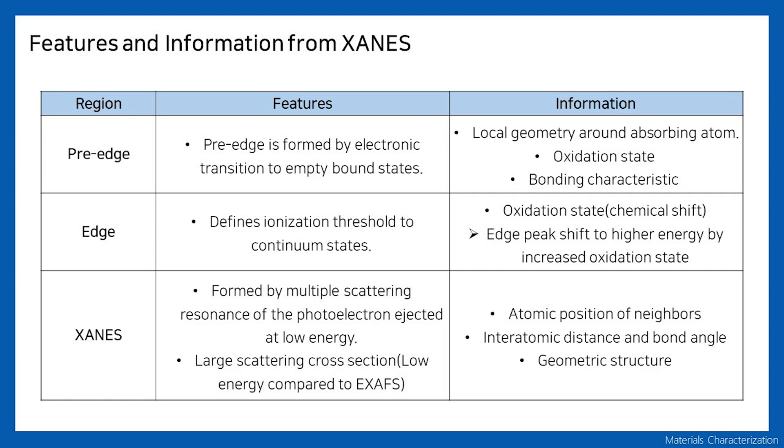From the XANES region, formed by multiple scattering, you can obtain the atomic positions of the neighboring atoms, interatomic distances, and bond angle, which all comprise the geometric structure around the target atom.